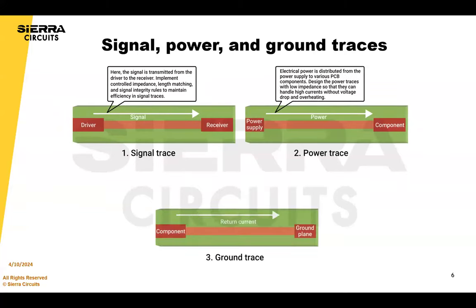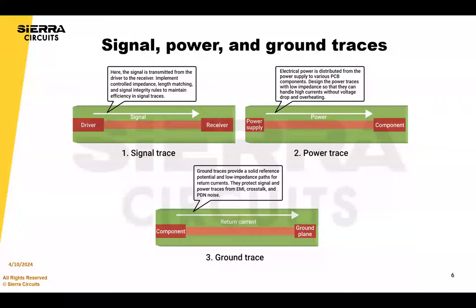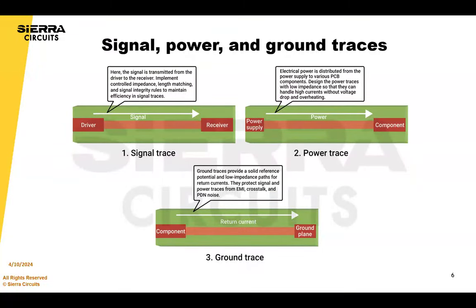Signal, power, and ground traces all have distinct roles, and you need to understand them to plan and execute your layout strategies for your high-speed and high-current applications. To achieve the electrical performance you want, you need to optimize your trace geometries and your routing paths.